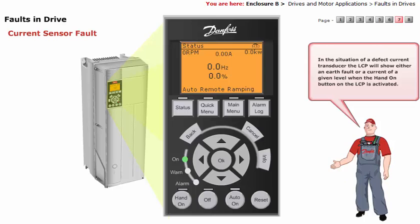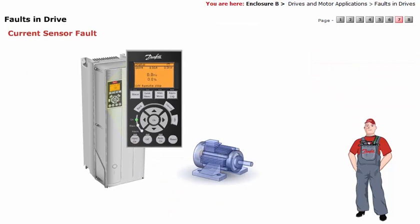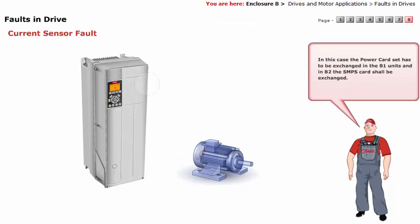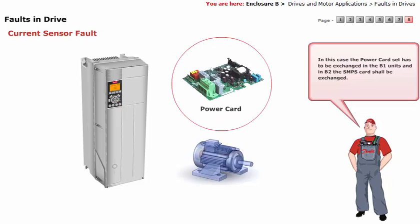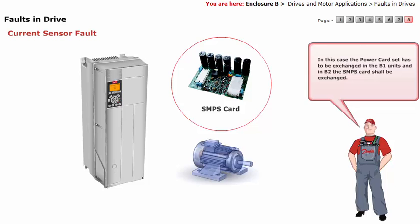In the situation of a defective current transducer, the LCP will show either an earth fault or a current of a given level when the hand-on button on the LCP is activated. In this case, the power card set has to be exchanged in the B1 units, and in B2, the SMPS card shall be exchanged.